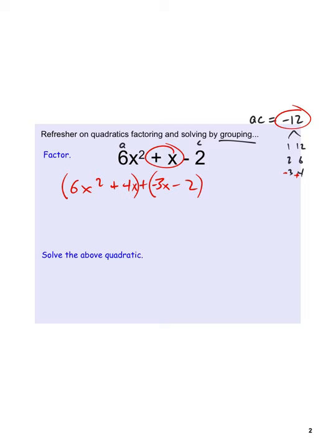From the first group, I pull out a 2x, which leaves me with 3x plus 2. From the second group, I pull out a negative 1, which also gives me 3x plus 2. With grouping, we want the same term inside the parentheses, so we can combine the outside factors to get 2x minus 1 and 3x plus 2.